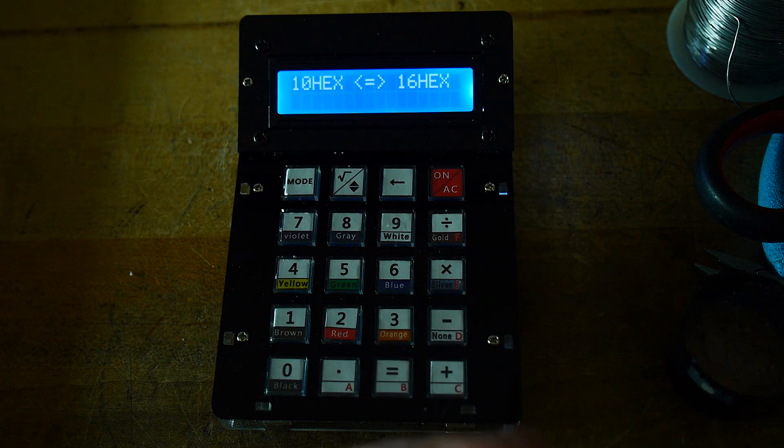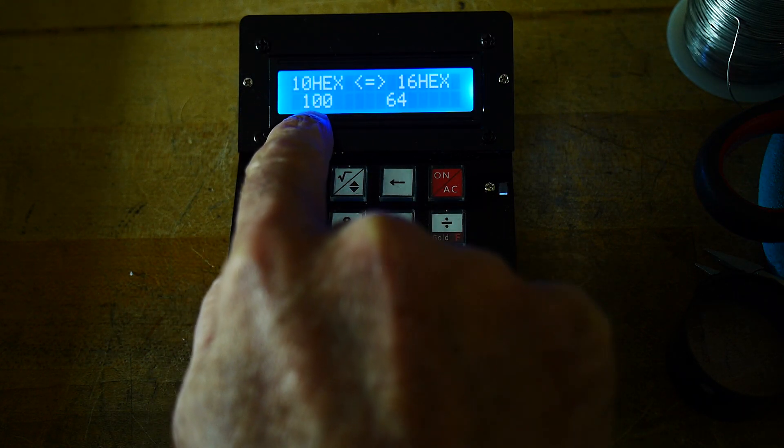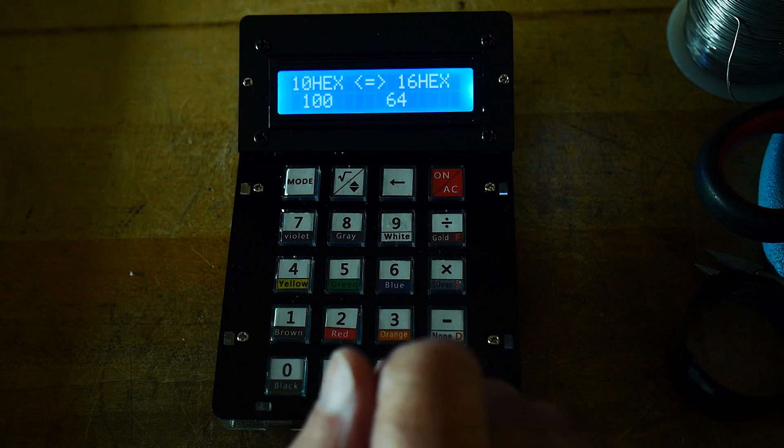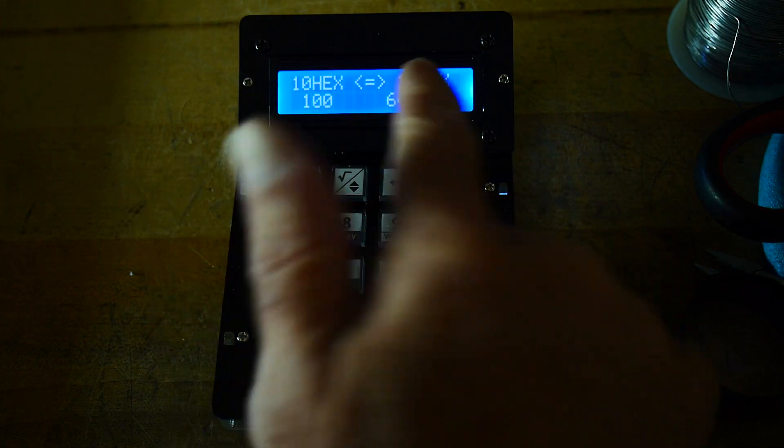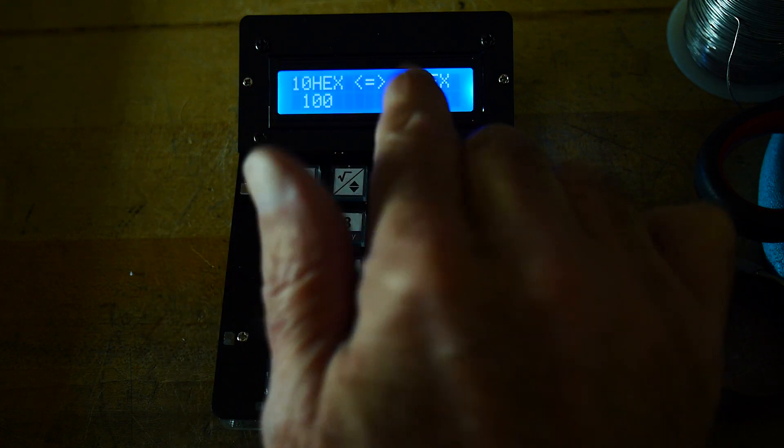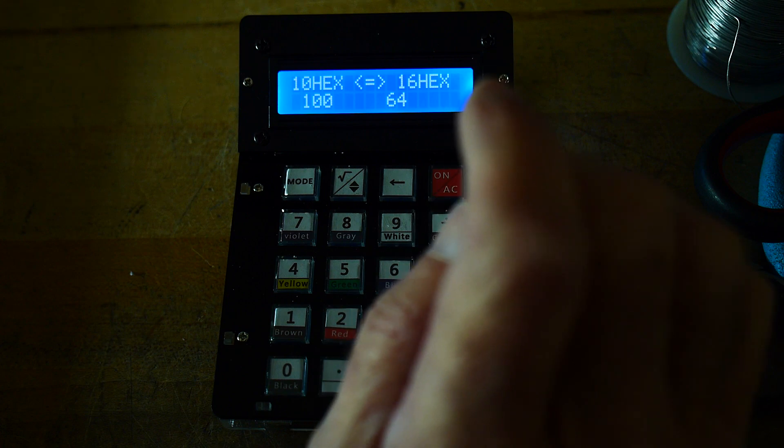So if you have a number, let's say you have 100. It's going to take 100 hex base 10. It's kind of weird. It says 10 hex to 16. So it's base 10 to base 16. So 100 is 64 in hexadecimal.